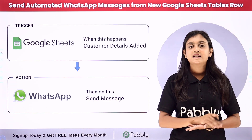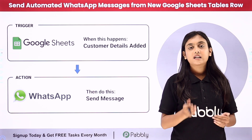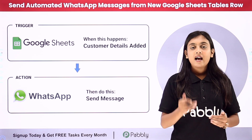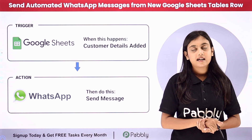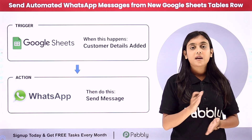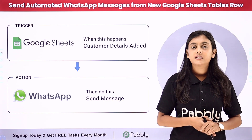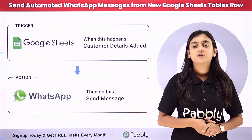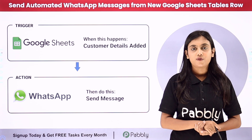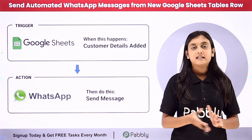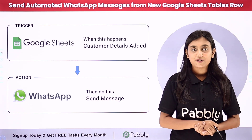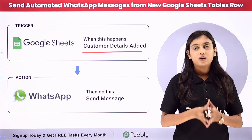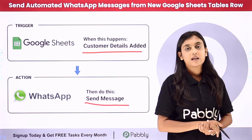I am part of a sales and marketing team in a company, and we create a record of our customers' contact details in a table in Google Sheets. We want that as soon as we enter the contact details of our customers in the Google Sheets table as a row, automatically a WhatsApp message should be forwarded to one of our team members regarding the contact details of our customer.